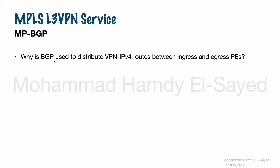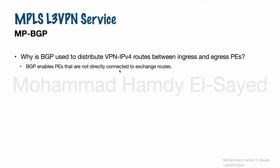Why is BGP used to distribute VPN IPv4 routes between ingress and egress PEs? Why are OSPF or ISIS not used? BGP enables PEs that are not directly connected to exchange routes. As we've seen before, the PEs are not directly connected to each other — there are multiple P routers in between them. BGP can be used between PEs precisely because they are not directly connected to each other.